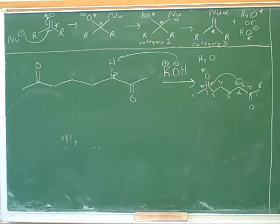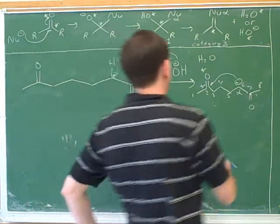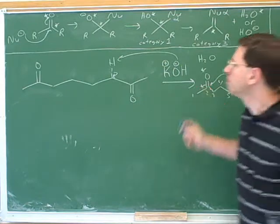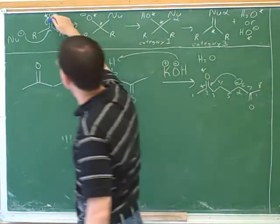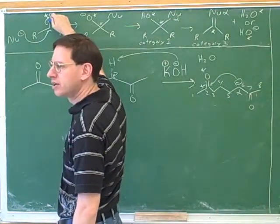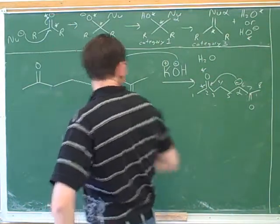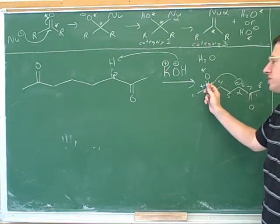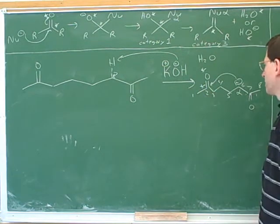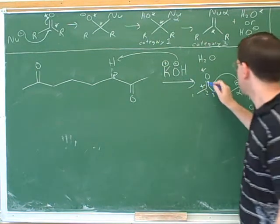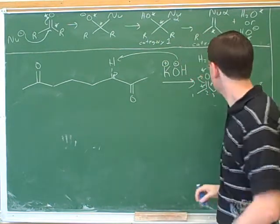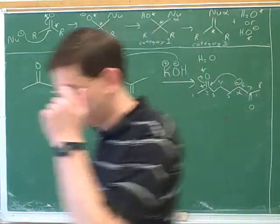One thing that might be confusing you: you drew the arrow for the alpha carbon attacking the number two, but I think you left out this arrow. We have to make room for the nucleophilic attack on the number two carbon, otherwise we wouldn't exceed an octet. That'll help us draw the intermediate for that step.